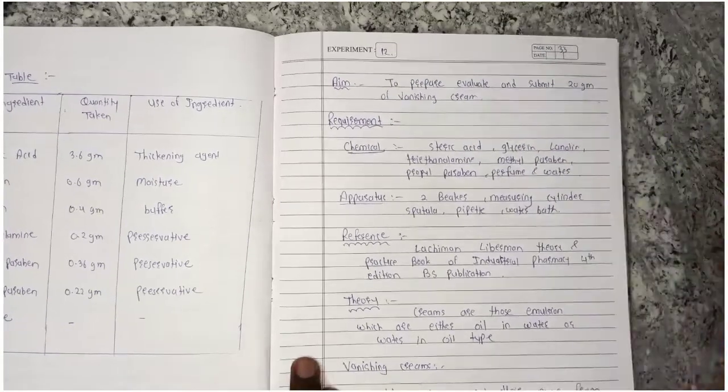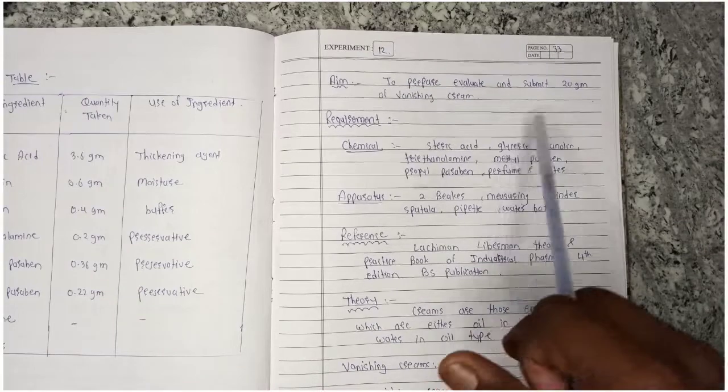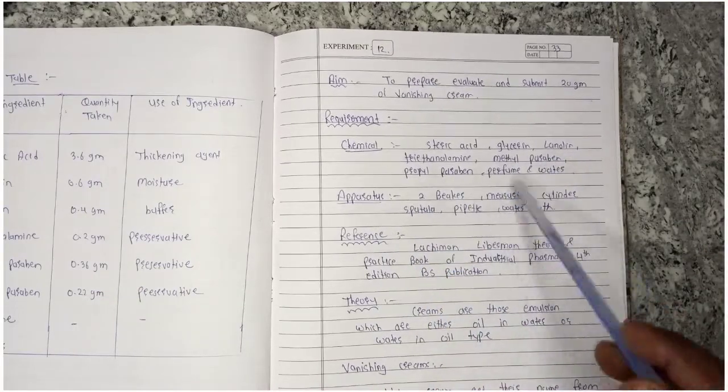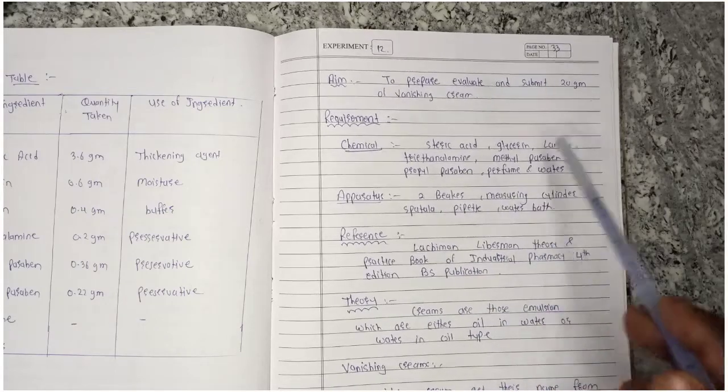The chemicals needed are: steric acid, glycerin, lanolin, triethanolamine, methylparaben, propylparaben, perfume, and water.